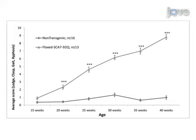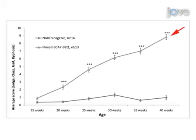Here is a representative graph of a composite phenotype assessment of a murine transgenic spinocerebellar ataxia type 7 model known as Phloxt SCA792Q. The scores of the four measures were summed for each mouse and the average composite score was calculated for both genotypes of each age. Phloxt SCA792Q mice exhibit a progressive SCA7 phenotype that is significantly different from non-transgenic littermates. Importantly, this increasing phenotype score over time is consistent with the progressive nature of the human disease.